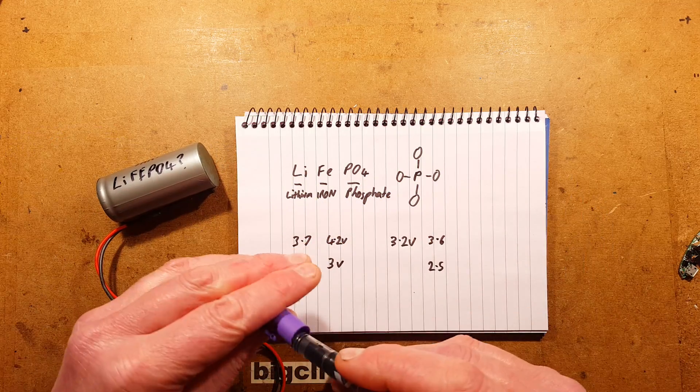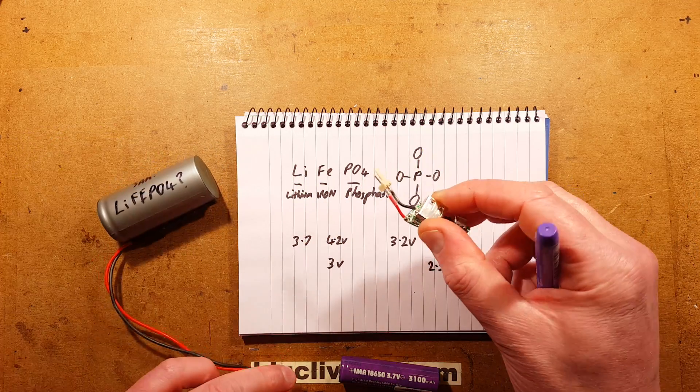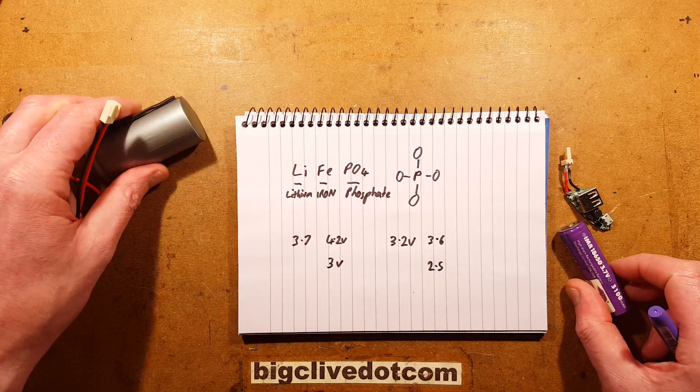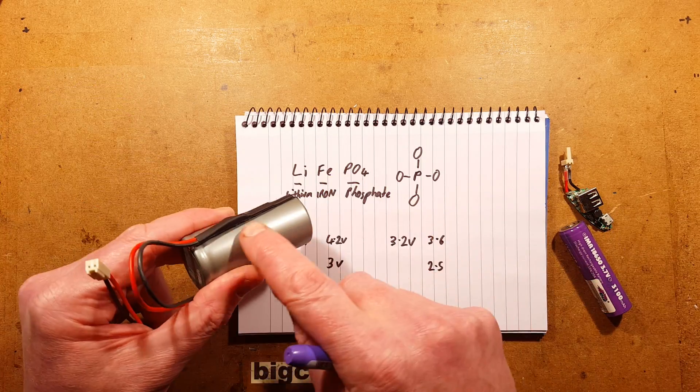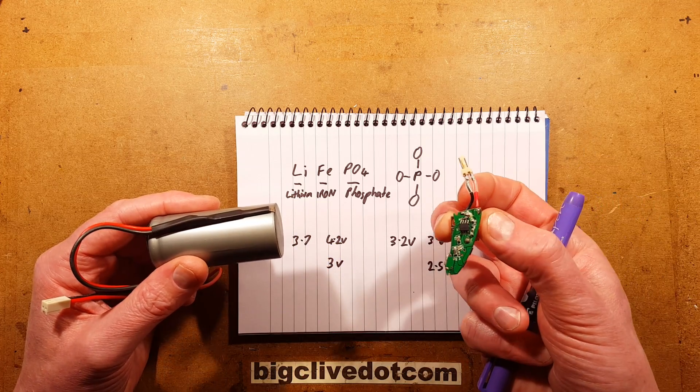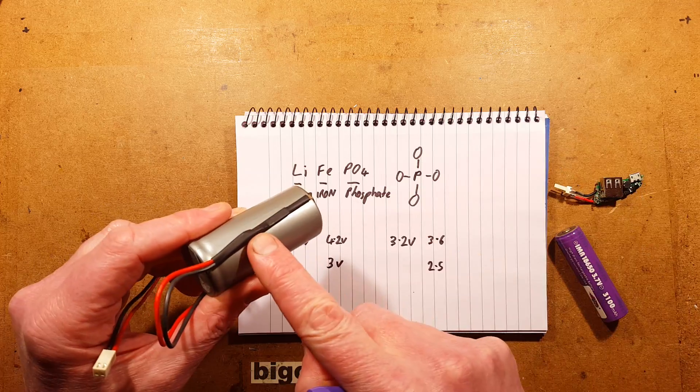To test that battery, I plugged it into my usual charging arrangement for one of these cells. But I did so knowing that if it turned out to be the different technology, the little protection board in here would cut out. And that's exactly what happened.